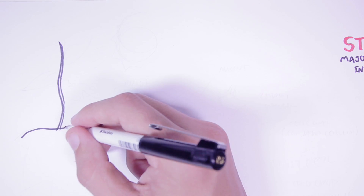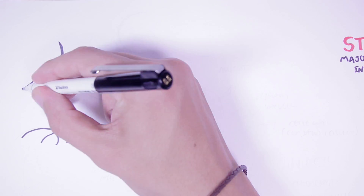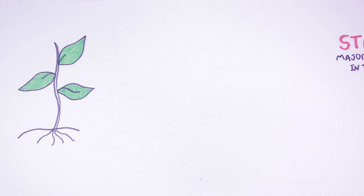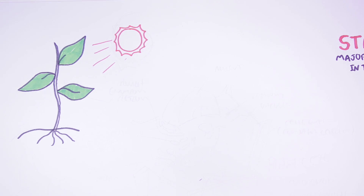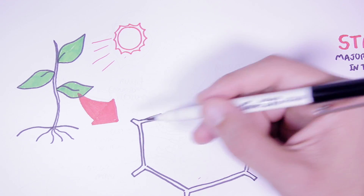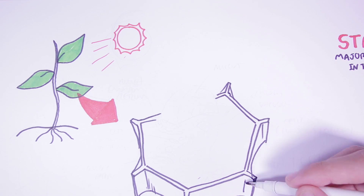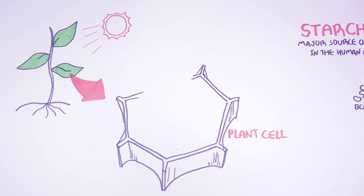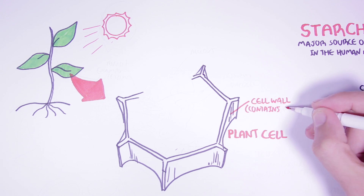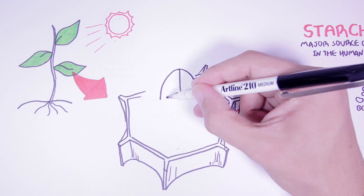Let's begin by looking at a regular plant with roots, receiving sunlight so that it can participate in photosynthesis. If we zoom into the leaf of this plant, we can find plant cells. Here is a cell with a cell wall. The cell wall of the plant cell is made up of the carbohydrate known as cellulose.